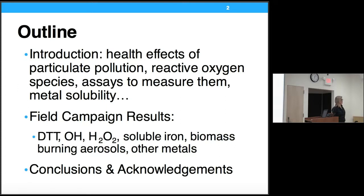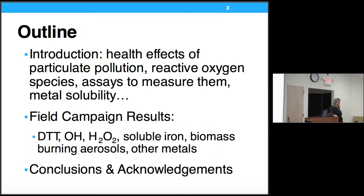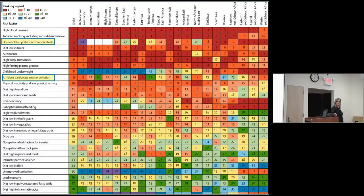By way of a little outline, so you know where we're going: first there'll be an introduction, which is fairly long because some students may not be familiar with the topic. We'll talk about health effects of particulate pollution, what reactive oxygen species are, assays to measure them, and metals solubility. Then I'll present results from field campaigns measuring particles in ambient air in California, including using the DTT assay, measuring OH formation, hydrogen peroxide, and related species. Finally, conclusions and acknowledgments.